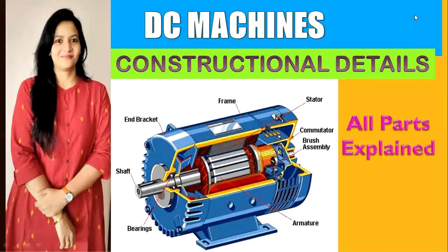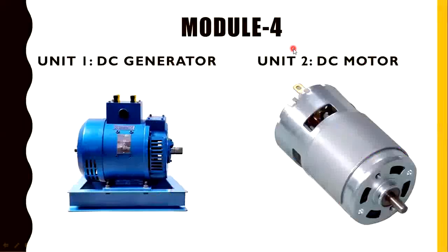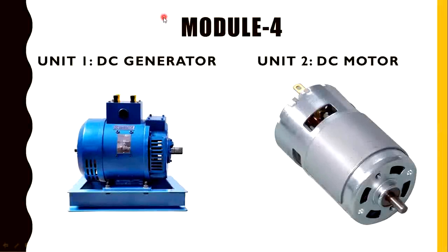In today's video we will discuss about DC machines. This is the fourth module of basic electrical engineering, and it is divided into two units: the first one is the DC generator and the second one is the DC motor. A DC generator converts mechanical energy into electrical energy, and a DC motor converts electrical energy into mechanical energy. So let's start with the DC generator.